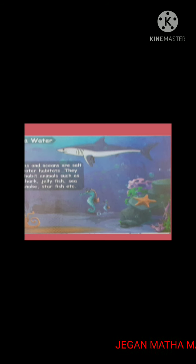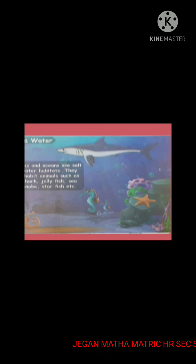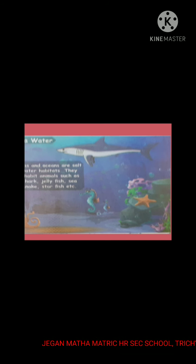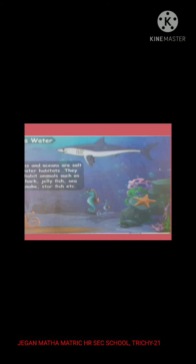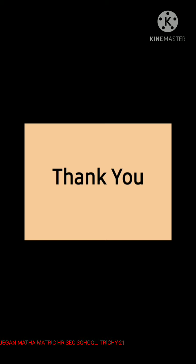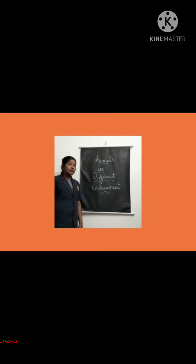Children, animals that live in water are called aquatic animals, and animals that live on land are called terrestrial animals. So we have learned about the terrestrial habitat and aquatic habitat of animals. I hope you got clear information about animals in different environments. Thank you students, have a nice day.